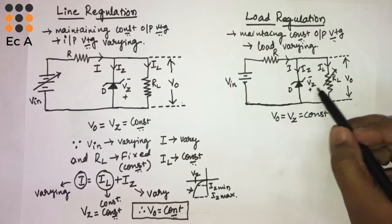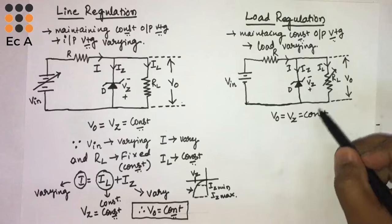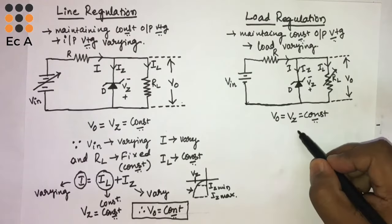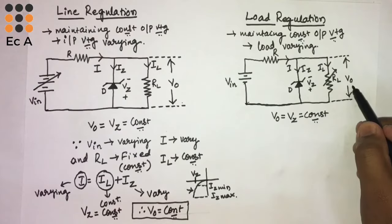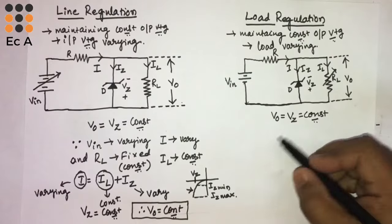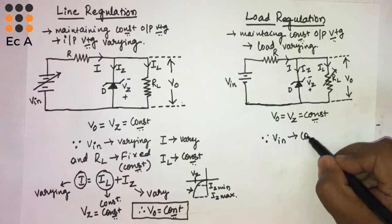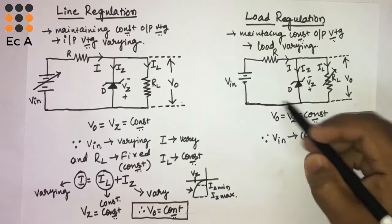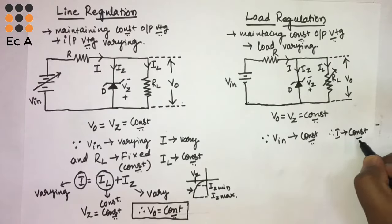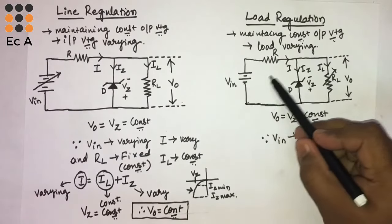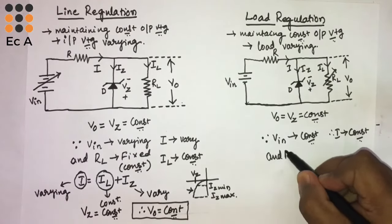R-L is connected in parallel with the zener diode, so V-out equals V-Z, and we should maintain V-Z as constant. Since V-in is constant, the current I will also be constant.